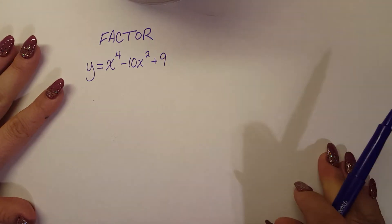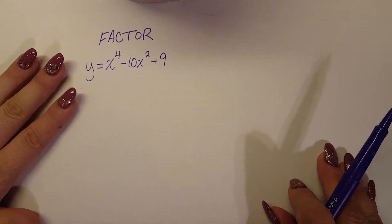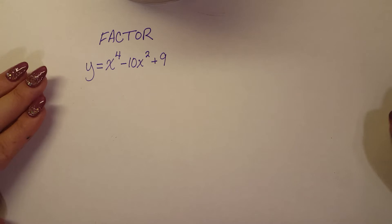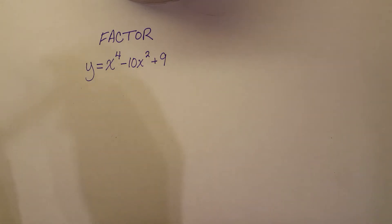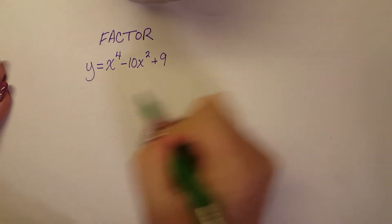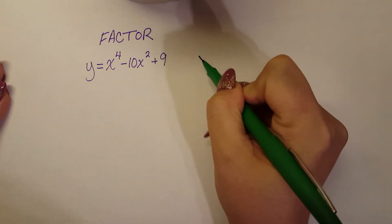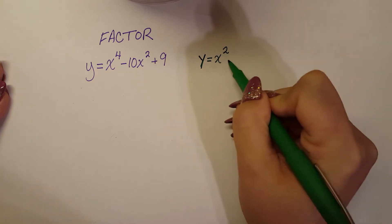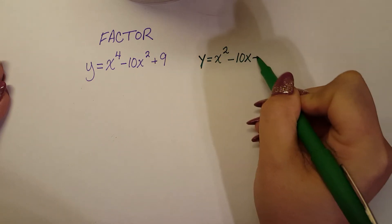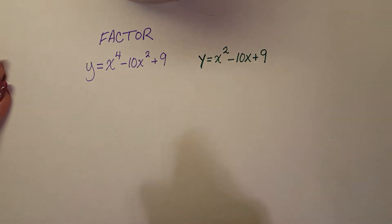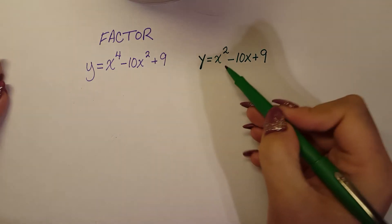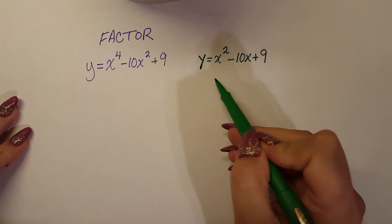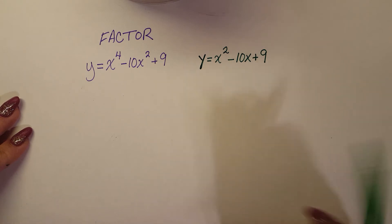So basically what I'm going to do is simplify this problem and make it look something more familiar that we've seen before. So off to the side, just so we could compare it to, we have y equals x squared minus 10x plus 9. This is something more friendly to us. So how would we normally factor a trinomial of this kind?